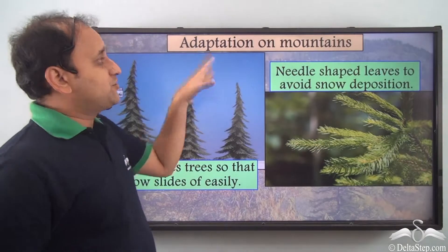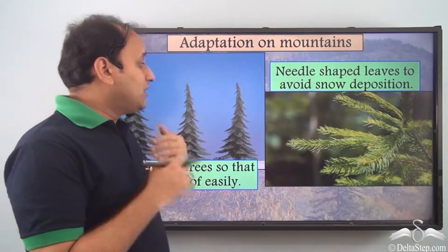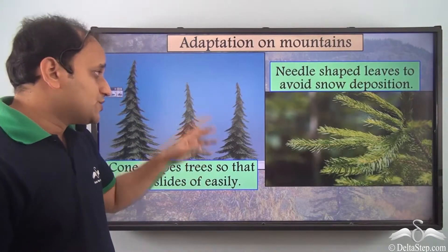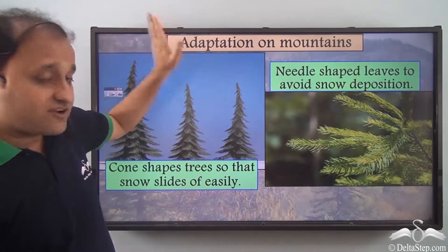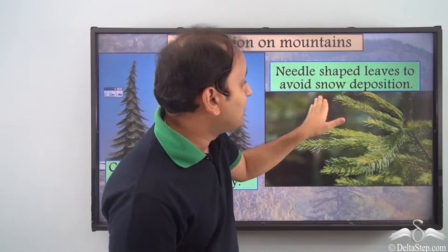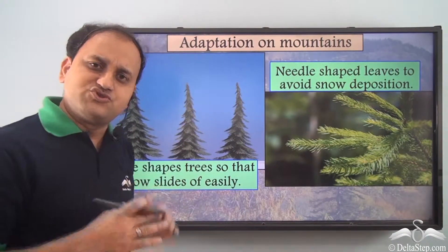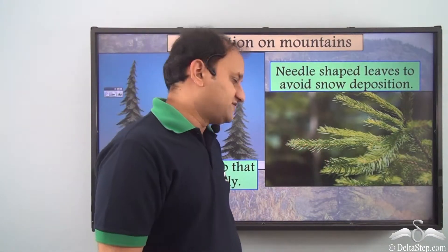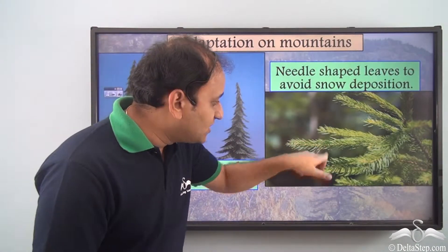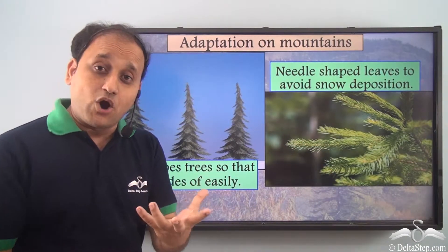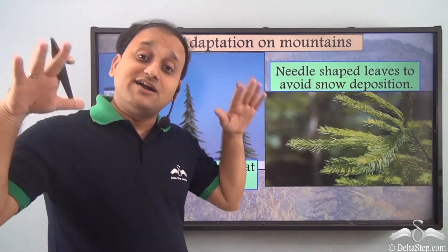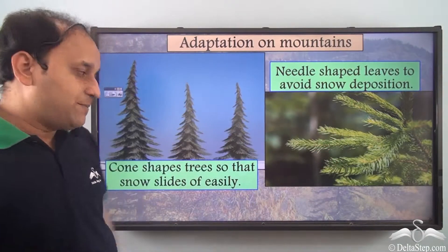Now let us come to adaptation on mountains. In mountains, conditions are very different, and as a result, adaptations are very different too. Plants which survive in mountainous regions have needle-shaped leaves to avoid snow deposition. Because there is huge snowfall, they have needle-shaped leaves so that when snow falls, most of it slides off easily and does not deposit on the leaves. If they had broad leaves, a lot of snow would deposit and the tree would collapse under its own weight.